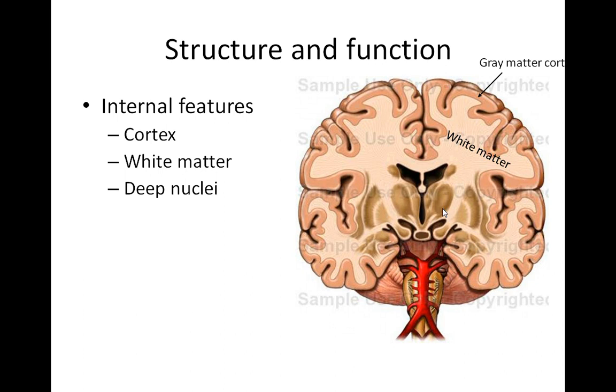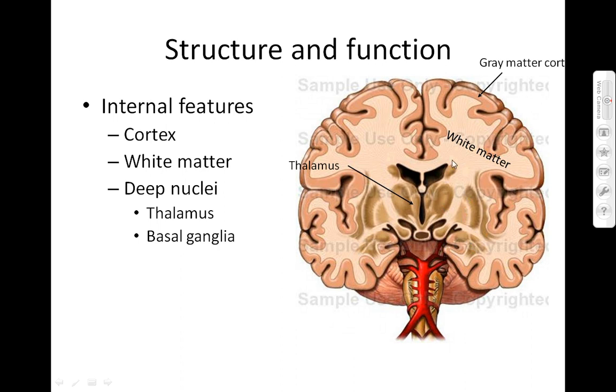With the deep nuclei, we've got a number of structures which form the deep nuclei. These include the thalamus, shown here, and the basal ganglia, which is shown outside the thalamus, here.